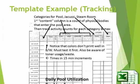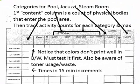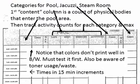Here's a template example. This is tracking for a pool. This one is probably representative. At the top you have categories for pool, jacuzzi, and steam room. Down the left-hand column, the first actual column is the time in 15-minute increments. The first content column is a count of how many physical bodies come into the pool area. And then we start one section for the pool activity counts, then the jacuzzi counts and the steam room counts.